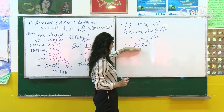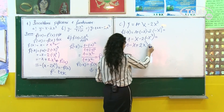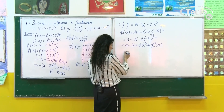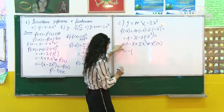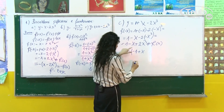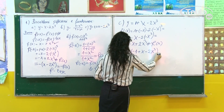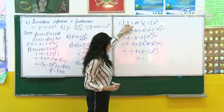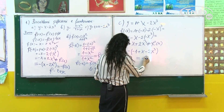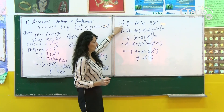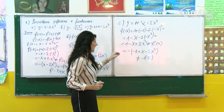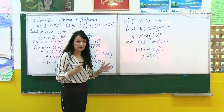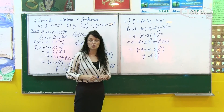Bëjmë krahasimin: shohim që kjo nuk është e barabartë me f(x). Pra arrijmë në përfundim që funksioni nuk është funksion qift. Atëherë shohim a mund të nxjerrim një minus para dhe të shohim çfarë fitohet. Kemi minus e plus japën minus, minus e minus kemi plus, dhe minus e plus kemi -2x³. Kemi minus para, por kjo vlerë e fituar nuk është e njëjtë me vlerën fillestare. Pra shprehja kur kemi zëvendësuar as nuk është e barabartë me f(x), as nuk është e barabartë me -f(x). Pra funksioni nuk është as qift as tek — dhe shumica e funksioneve e plotësojnë këtë kusht, pra janë as qift as tek.